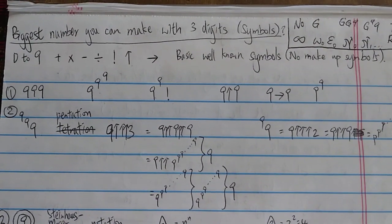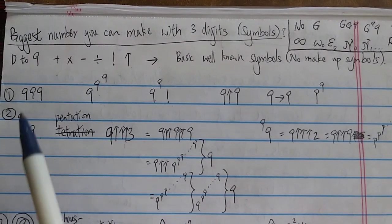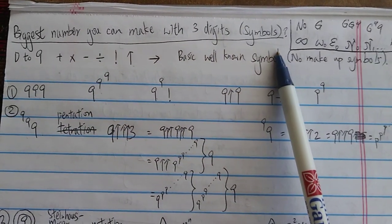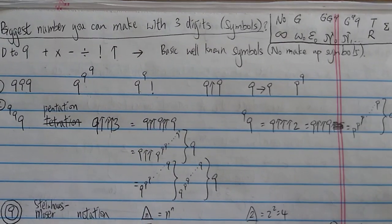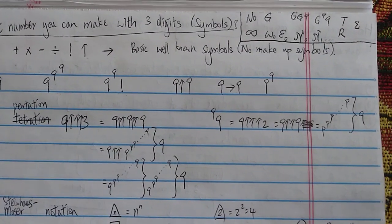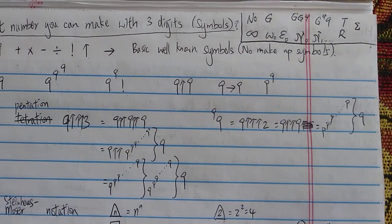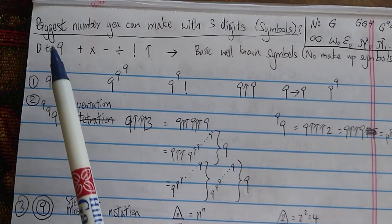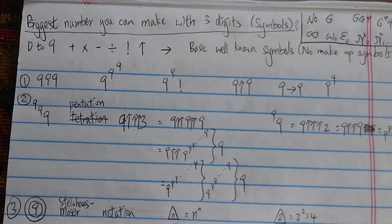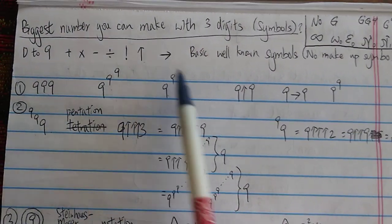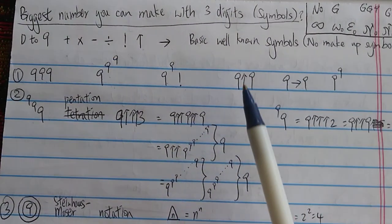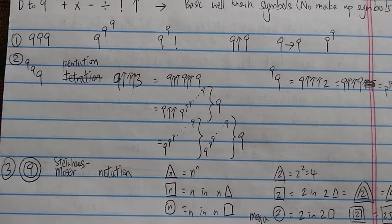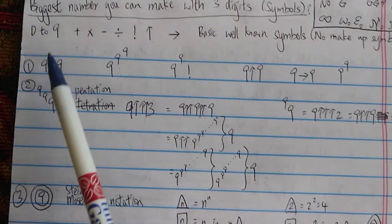Hi everyone. Today I want to make a follow-up video on the biggest number you can make with three digits or symbols. The reason for this is I forgot to mention something quite important regarding the rules.